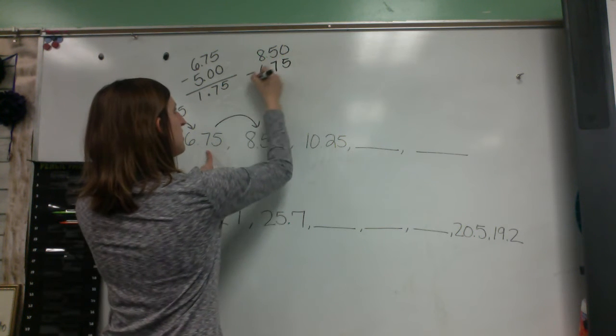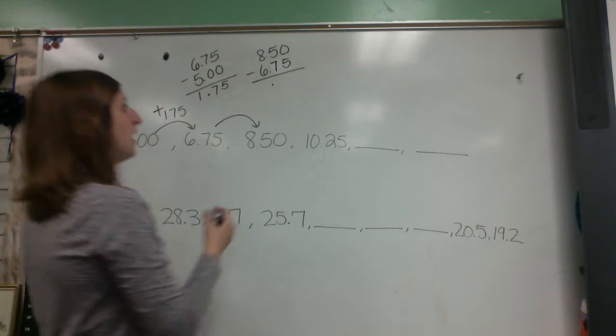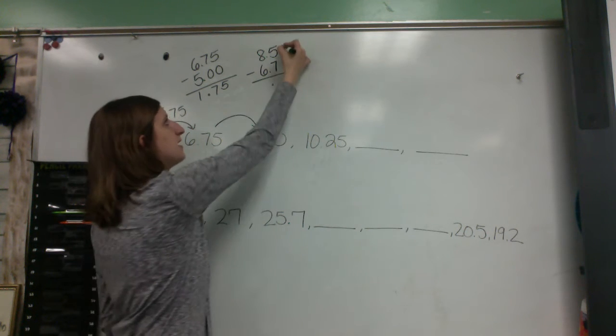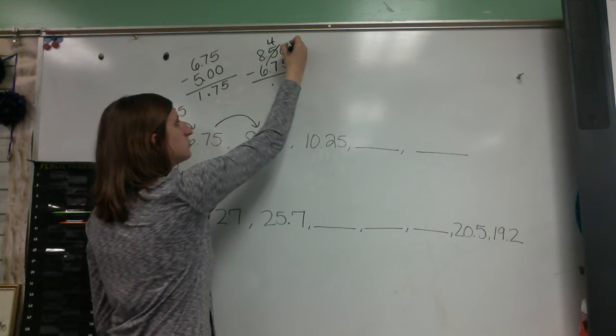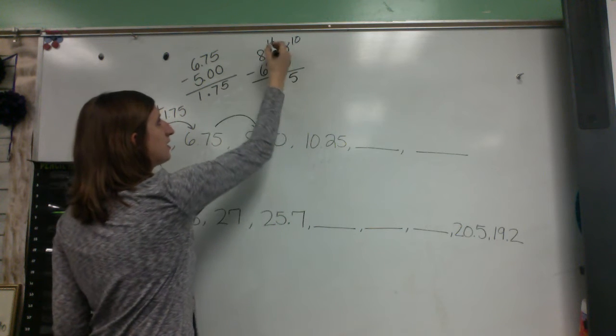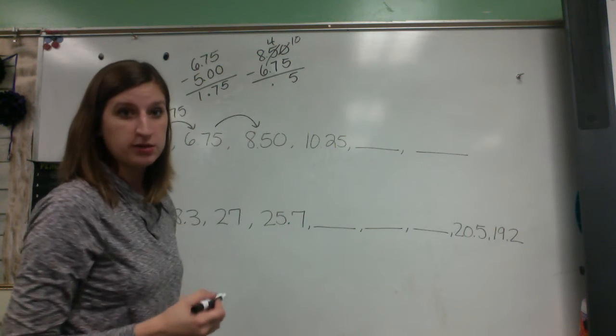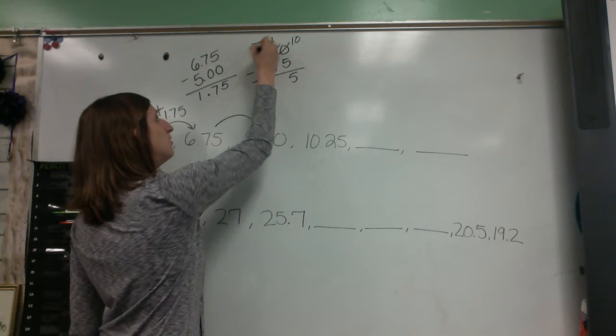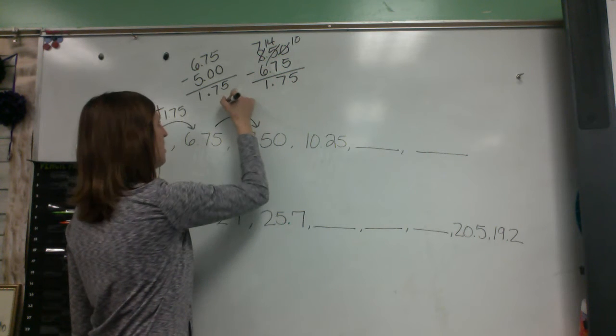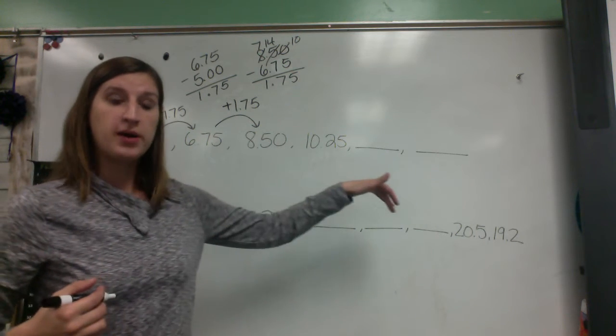So I'm going to line this up really quickly. 8.50 and I'm subtracting 6.75, placing my decimal in the answer right below. Your decimal should be lined up. I need to regroup. If I have zero, I cannot take away 5. I have to go borrow from the next door over. So mark out that, make it a 4, make this a 10. 10 minus 5 is 5. Cannot do 4 minus 7. I have to go borrow. That becomes a 14. 14 minus 7 is 7. 7 minus 6 is 1. So I also got 1.75 there. So I can confidently say that each time I'm going up 1.75.